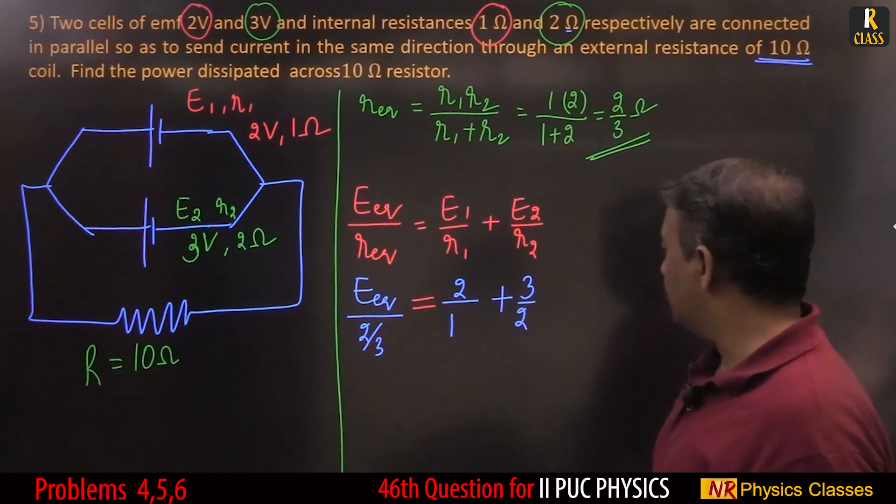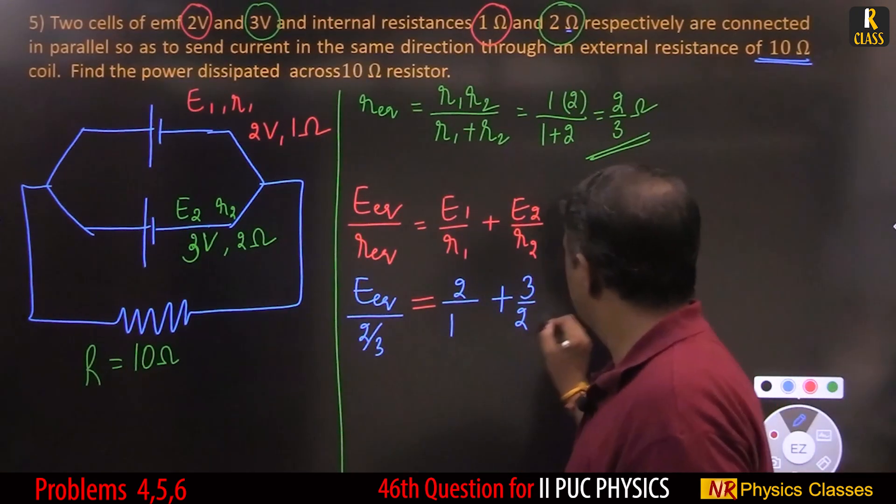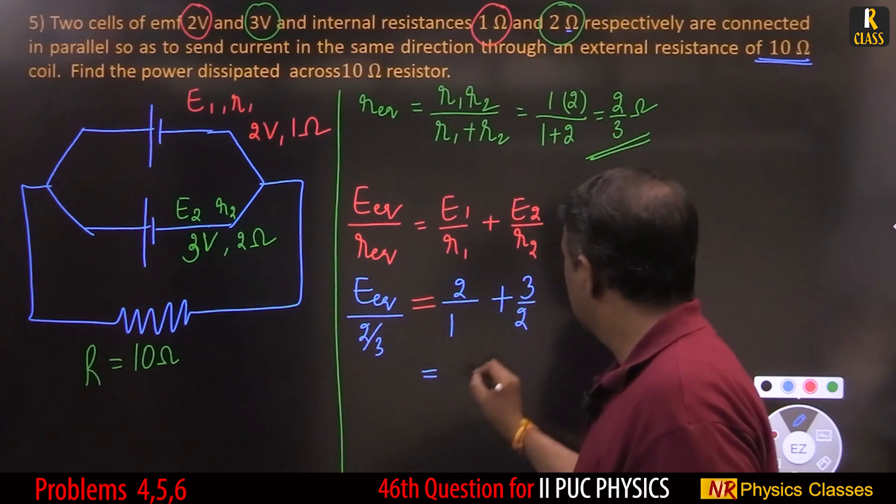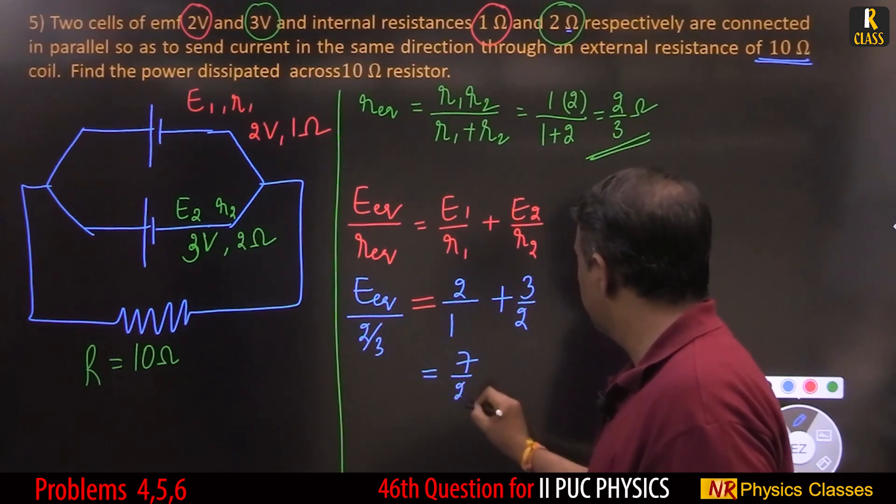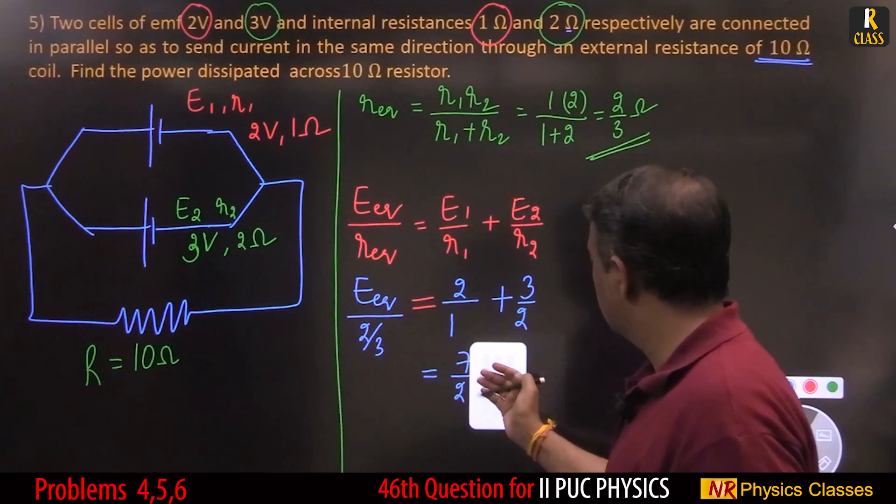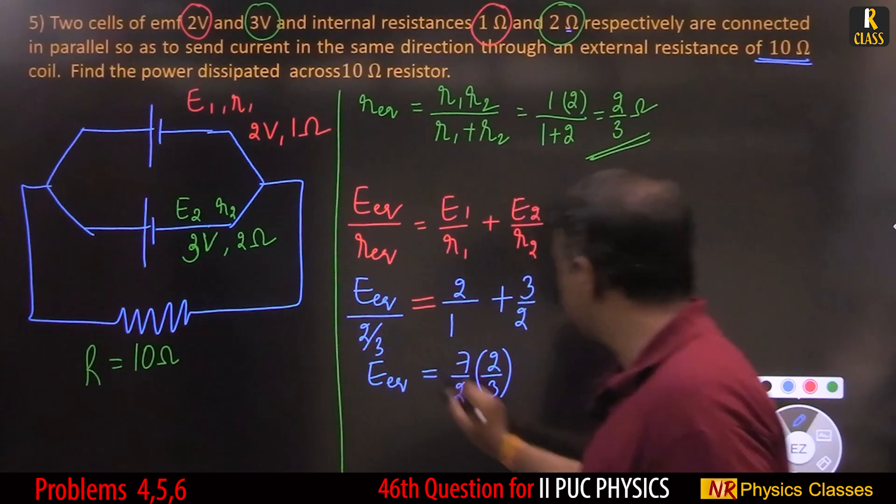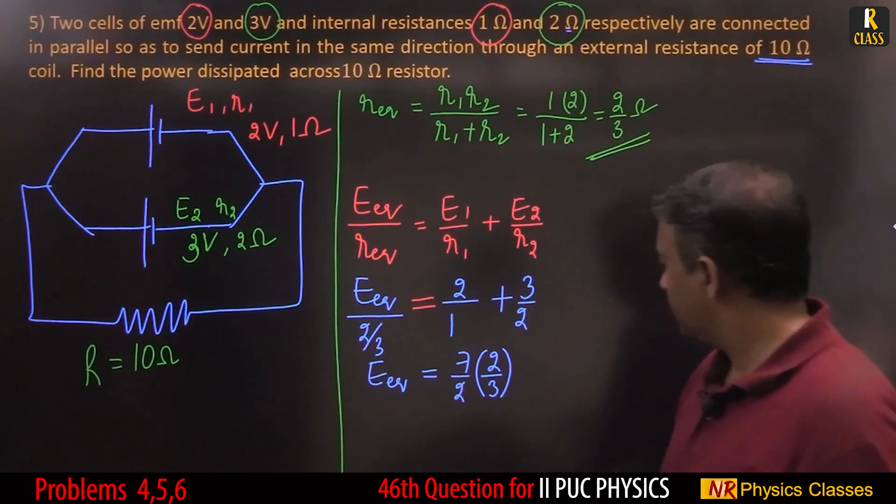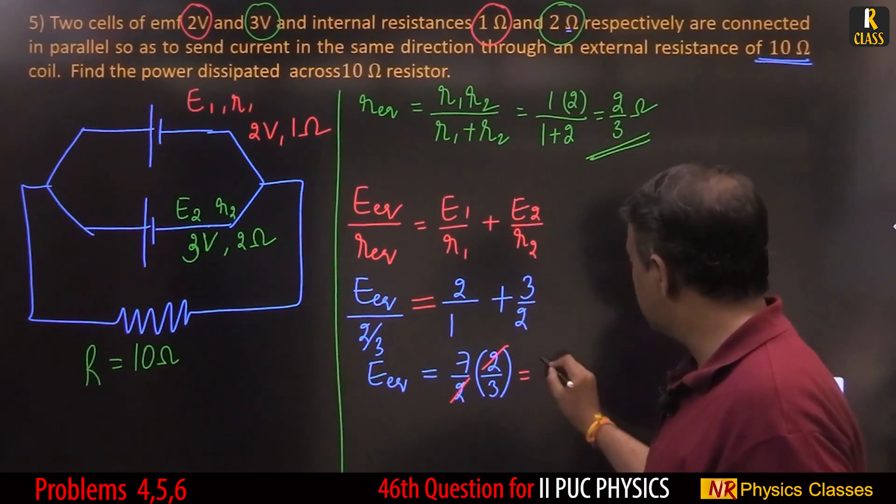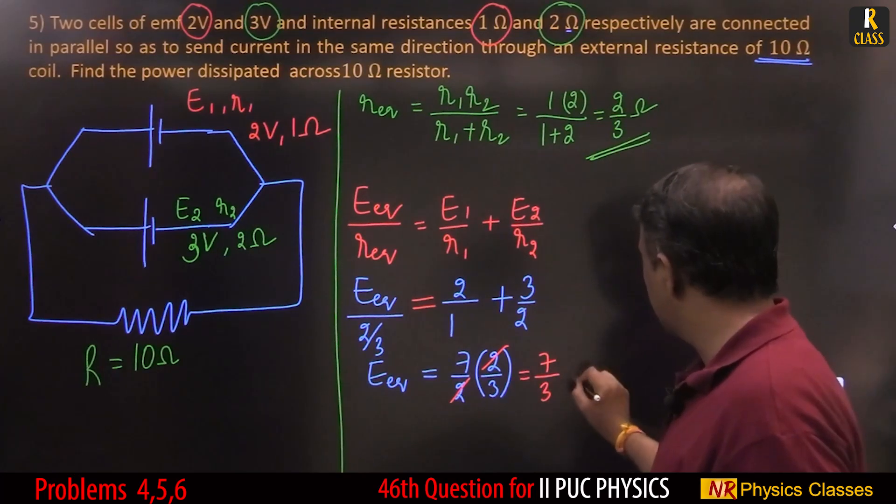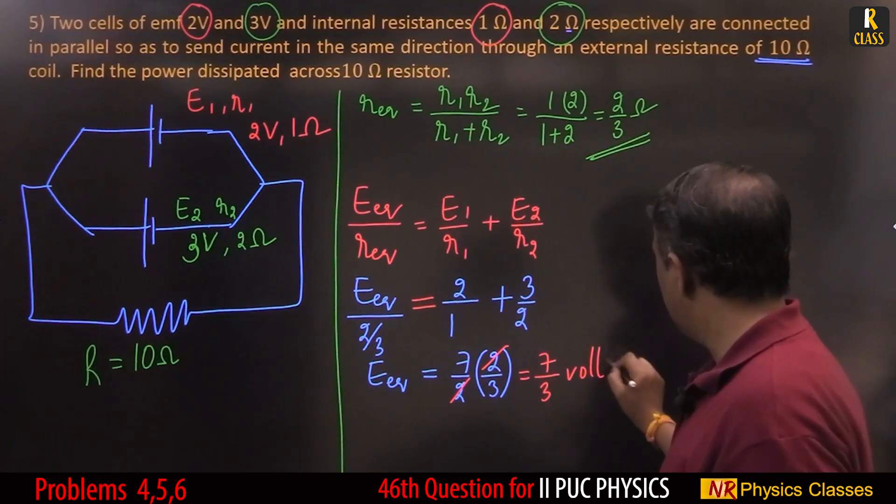So 4 plus 7 by 2 equals 7 by 2 into 2 by 3. So E equivalent is 7 by 3 volt.